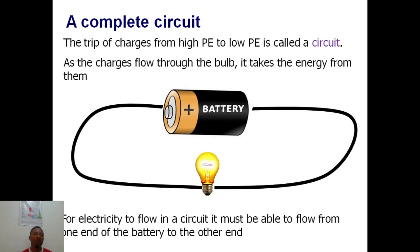The trip of a charge from a high potential energy region to a low potential energy region is called a circuit. As charge flows through the bulb, it takes energy with it. For electricity to flow in a circuit, it must flow from one end of the battery to the other. If there is any gap or obstruction in the wire, electricity will not be able to flow.